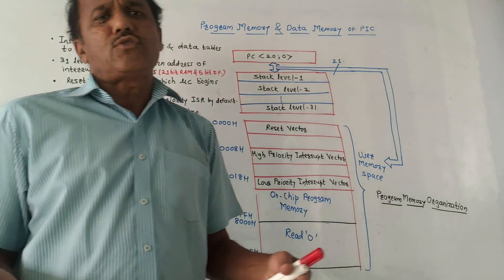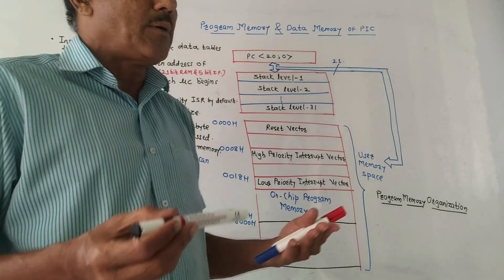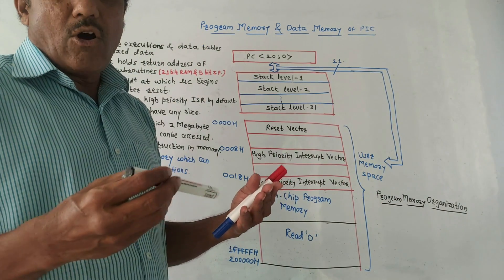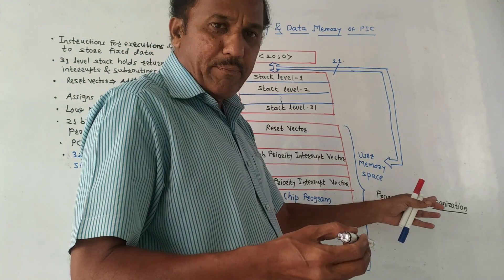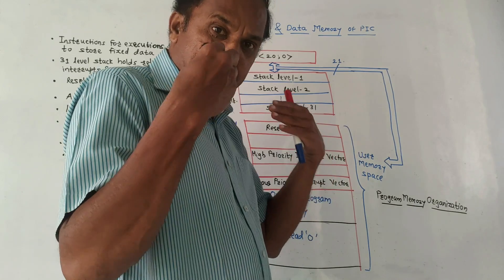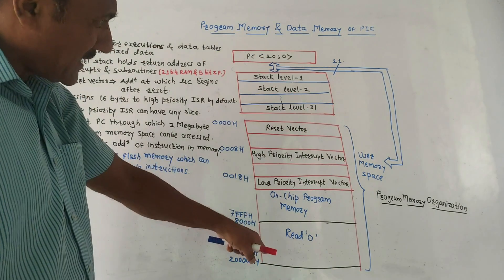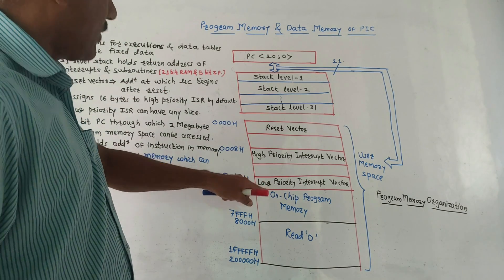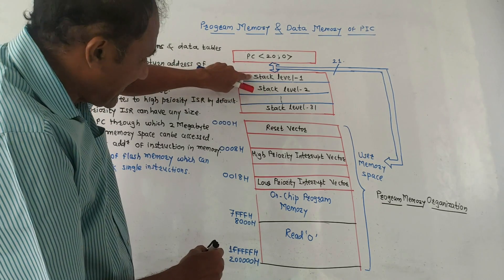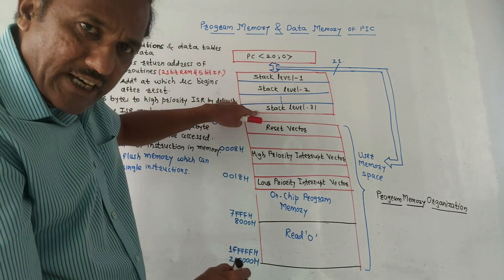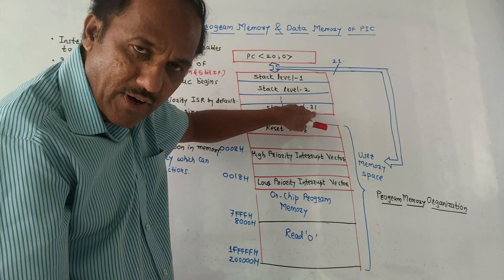From an exam point of view, you may be asked to draw the program memory organization or write the functioning or elaborate the program memory organization or program memory mapping. This is the block schematic for program memory organization. For the stack, there are 31 levels — stack level one, stack level two, up to stack level 31.